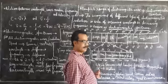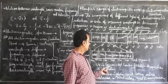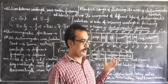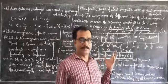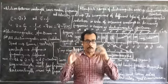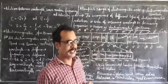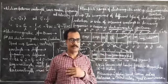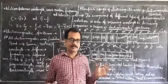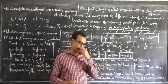Ultraviolet rays are used in germicidal lamps. In modern RO water purifiers, there is an ultraviolet chamber through which water passes, killing bacteria, viruses, and all microorganisms. That is why UV is used in germicidal lamps.